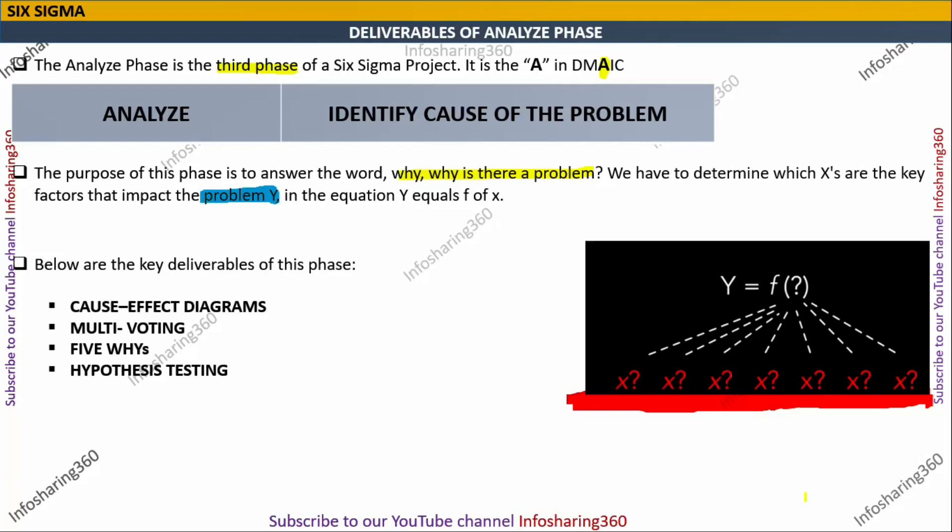After this, we will discuss some deliverables of this phase. We will study the cause and effect diagram, which we call Ishikawa or fishbone diagram. Then we will discuss multi-voting, 5 whys, and hypothesis testing.